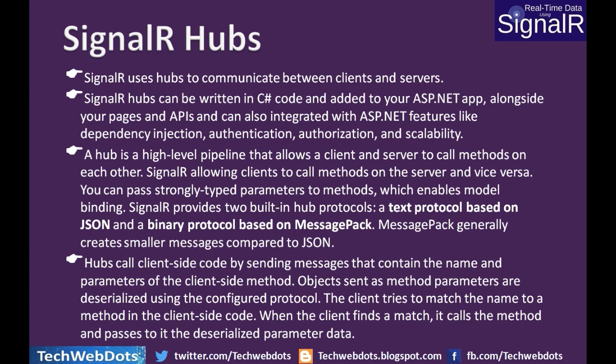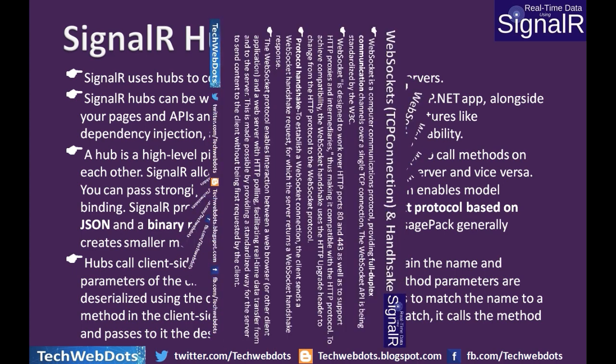Hubs call client-side code by sending messages that contain the name and parameters of the client-side method. If the server wants to call a client-side method, it tells the client what parameters and methods it wants to call. Objects sent as method parameters are deserialized using the configured protocol. The client tries to match the name to a method in the client-side code. When the client finds a match, it calls the method and passes it the deserialized parameter data.